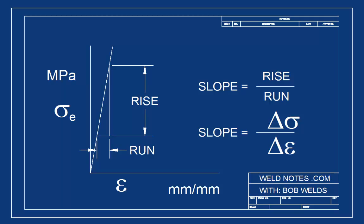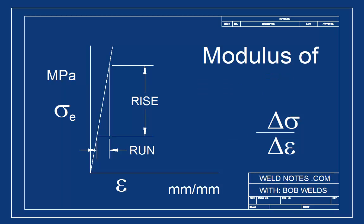On a stress-strain diagram, the slope of this line has a special name. It's called the modulus of elasticity. You'll also hear it called Young's modulus. We use a capital letter E to represent the modulus of elasticity.